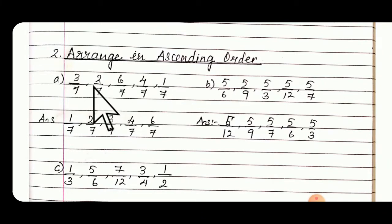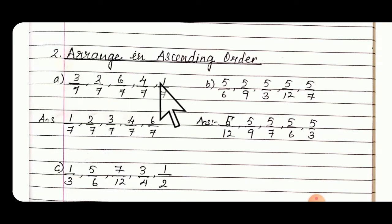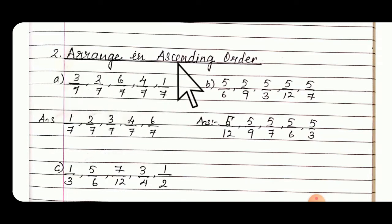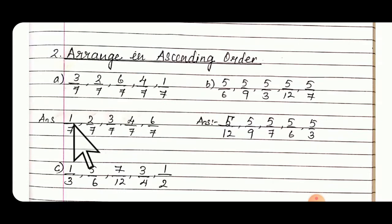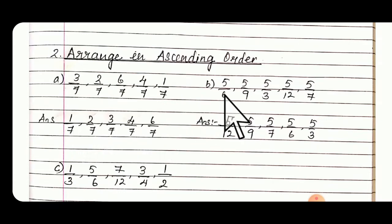Arrange in ascending order. See A — it is very easy. All the denominators are same, so you only need to look at the numerator. Ascending order means smaller to big. So the order is 1, 2, 3, 4, and 6. Keep the denominator the same.